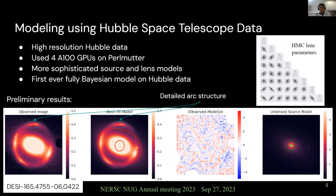In addition, we used more sophisticated models for the lens, for the gravity of the lens, as well as other light profiles — for example, for this little dot at the right arc, because of the high resolution of the image. Despite the complexity of the system, the high number of parameters, and the size of the image, this is the first time anyone has performed a fully Bayesian model on Hubble data. We achieved around 50 minutes of modeling time, as well as very statistically robust results, as you can see in the corner plot for the HMC of the lens parameters.